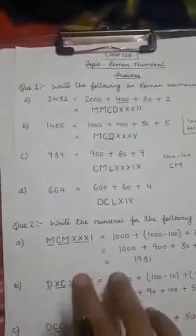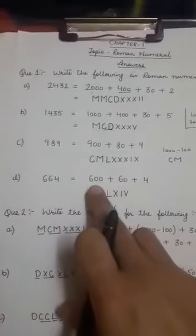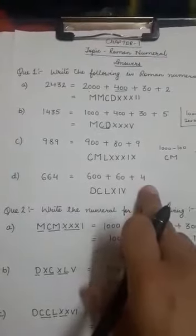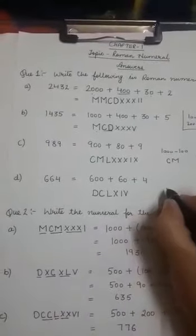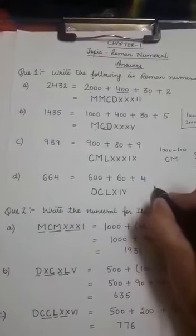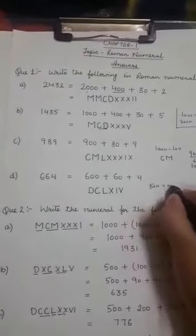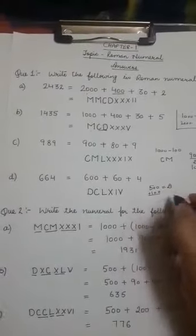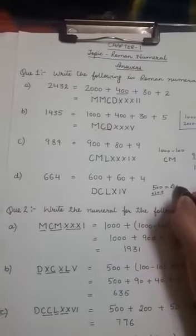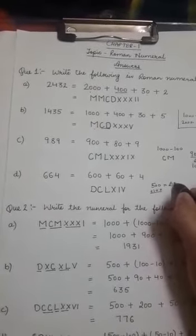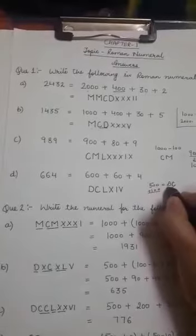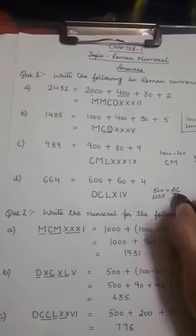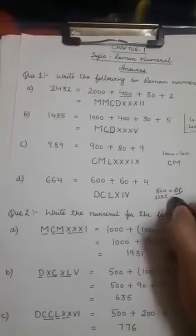Next, 664. Again expand the number. 600 plus 60 plus 4. Now for 600, how can I make 600? I have symbol for 500. 500 symbol is D. Now I have to add 100 to 500 to make it 600. So I will write symbol C on the right of D to form 600.